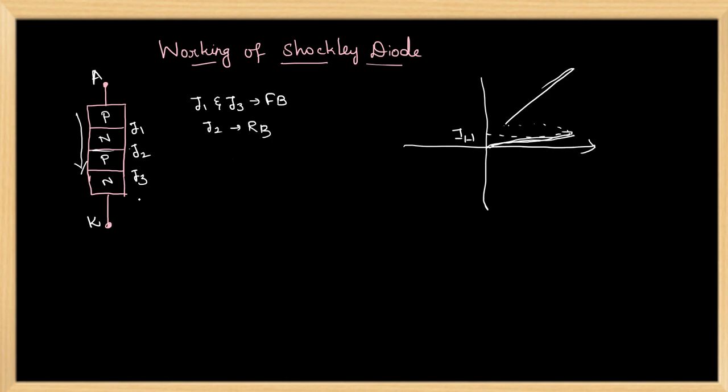When the anode is made negative with respect to cathode, junction J2 is forward biased and junctions J1 and J3 are reverse biased.